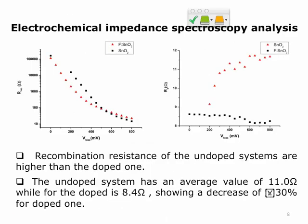We also performed impedance spectroscopy analysis for both systems. The recombination resistance of the undoped system is actually higher, meaning less recombination, which can also be a factor in the better performance of undoped tin dioxide solar cells. The major driver for doping — increased conductivity — is clearly confirmed by the series resistance of the cell, where the doped tin dioxide system shows much lower series resistance compared to the undoped one.